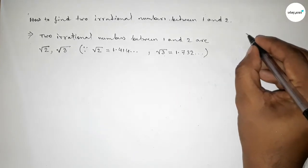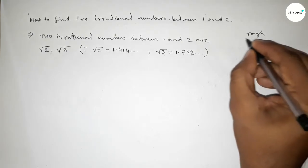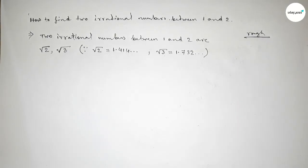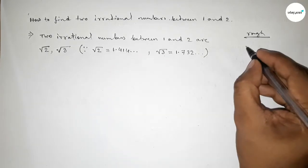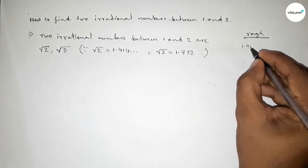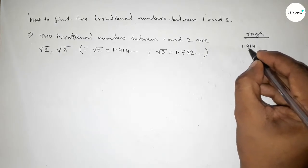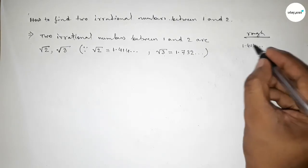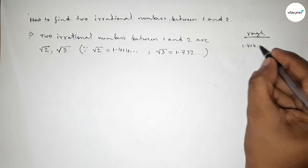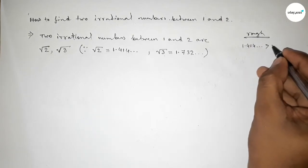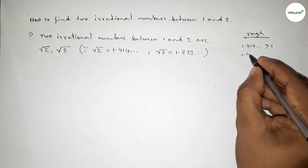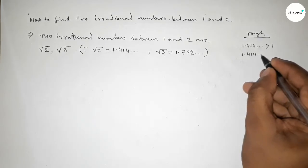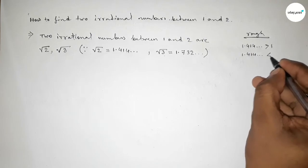Now roughly discussing the value of √2 and √3 to clear the concept. So here the value of √2 equals 1.414 and continuous, so this is always greater than 1. And 1.414 and continuous is always less than 2, so √2 is an irrational number.